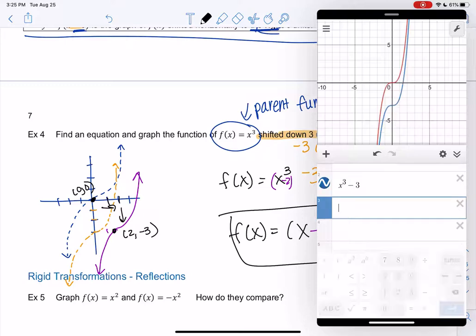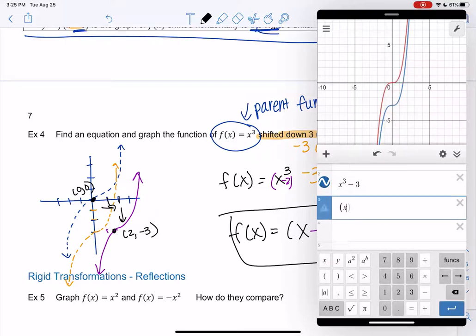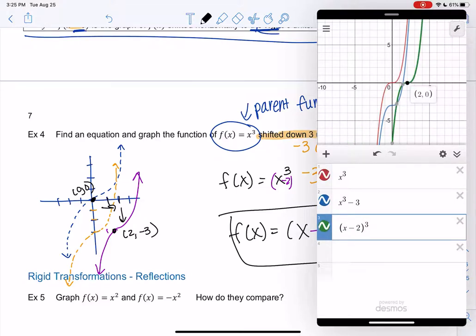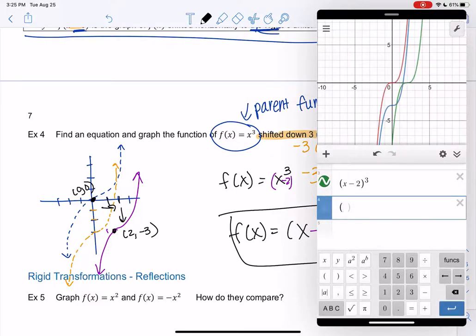But now it's at 0, negative 3. And then when we do the inner function, x minus 2, right? Left and right moves are inside parentheses. So you see that move moves it to the right. And then when I combine them, it'll move down. And to the right. So I like Desmos for kind of just playing with the individual moves.